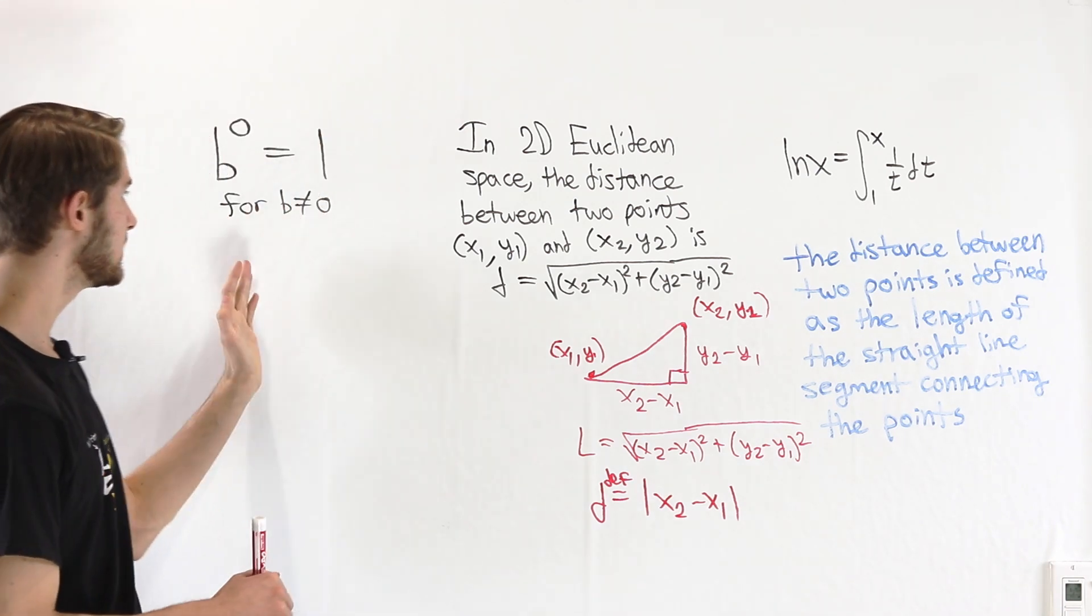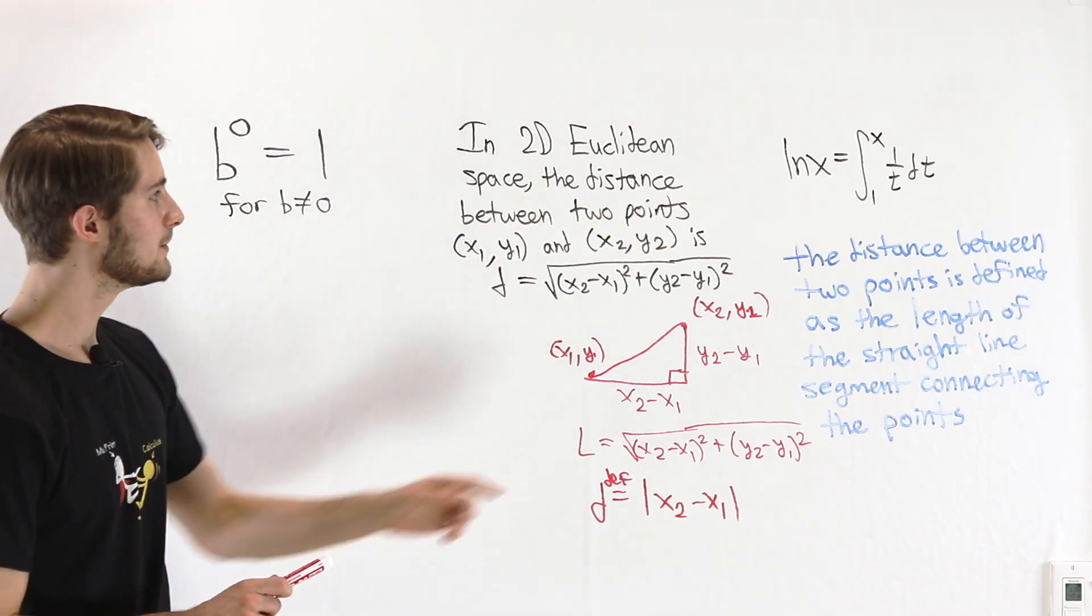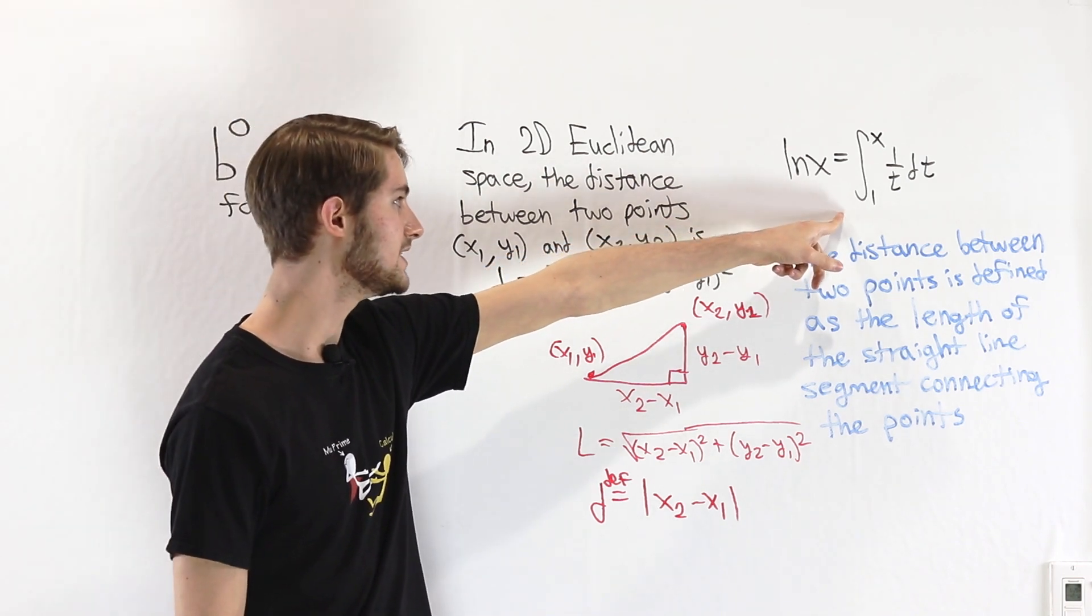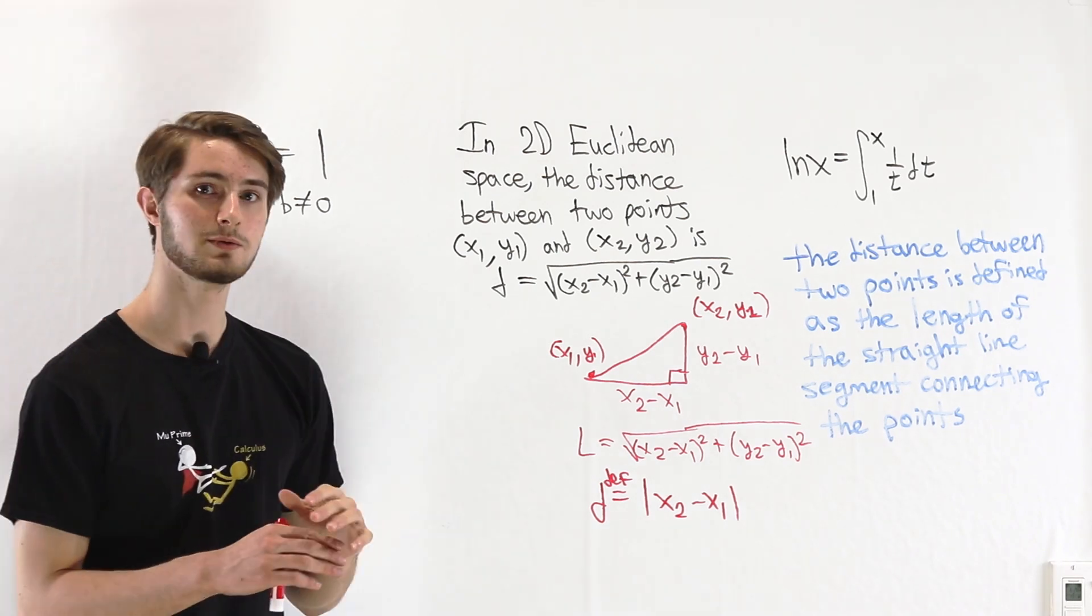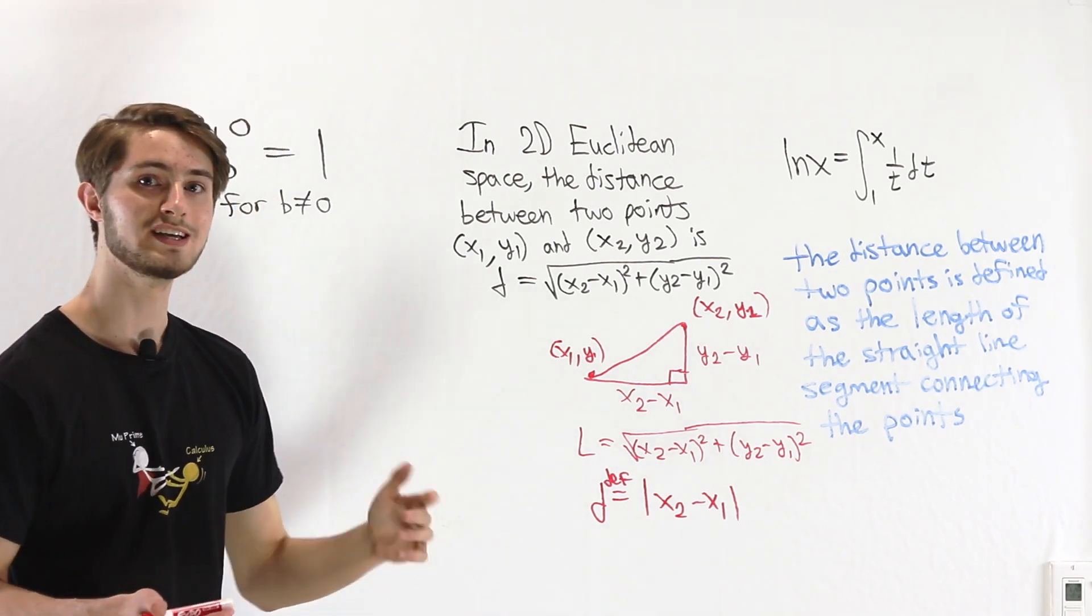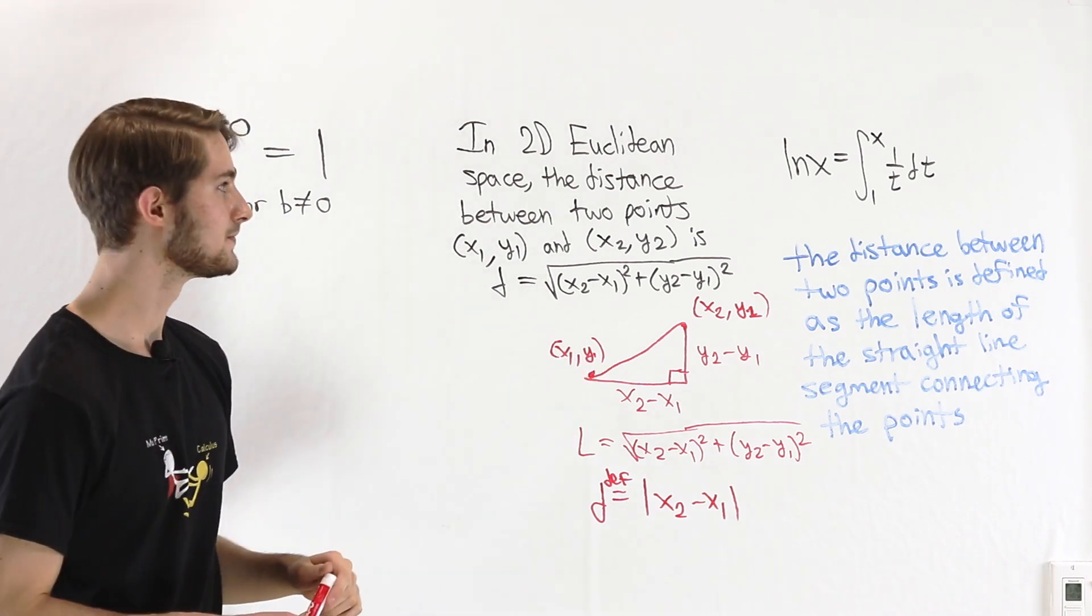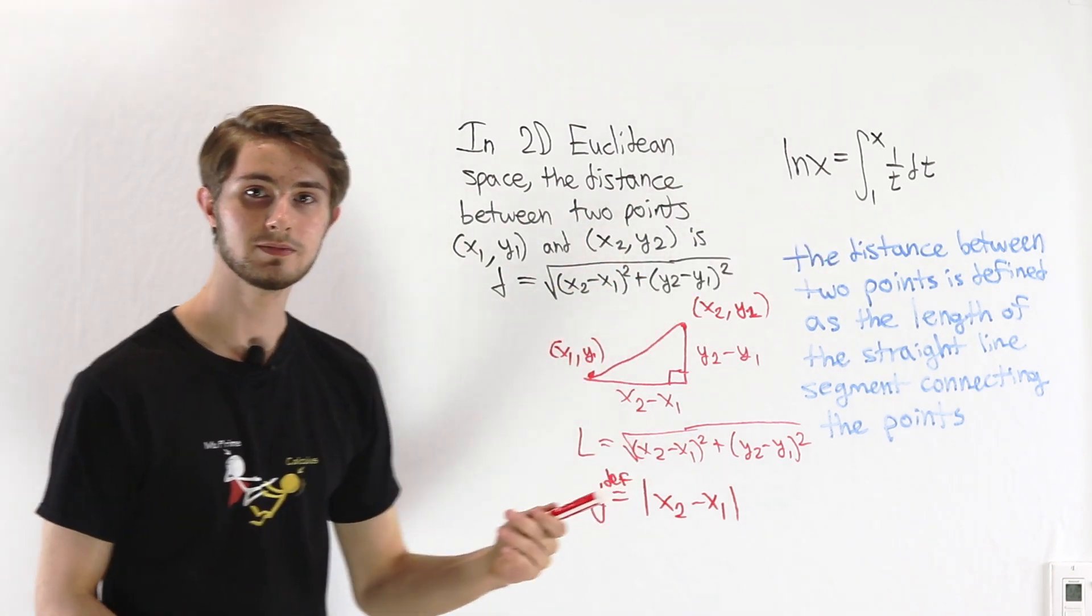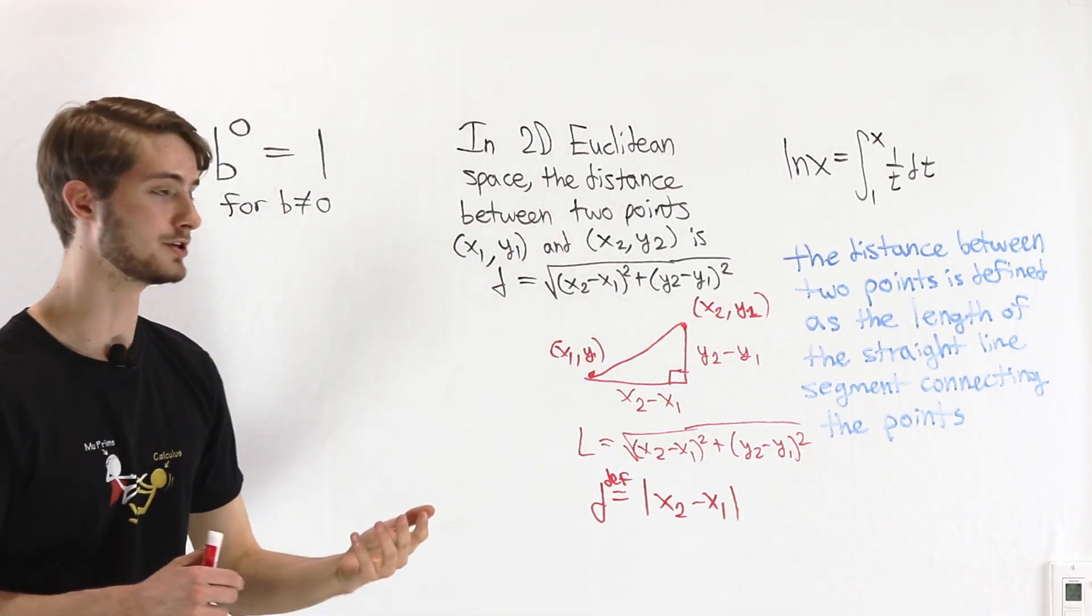Now, if I were to guess which one of these being a definition is the most confusing, it might be this one right here, that the natural log of x equals the integral from one to x of one over t dt. Because most of the time when we learn about the natural log, it's defined to be the inverse of e to the x. So this integral, isn't that a theorem? Don't we prove that using the definition of the derivative and then the fundamental theorem of calculus?